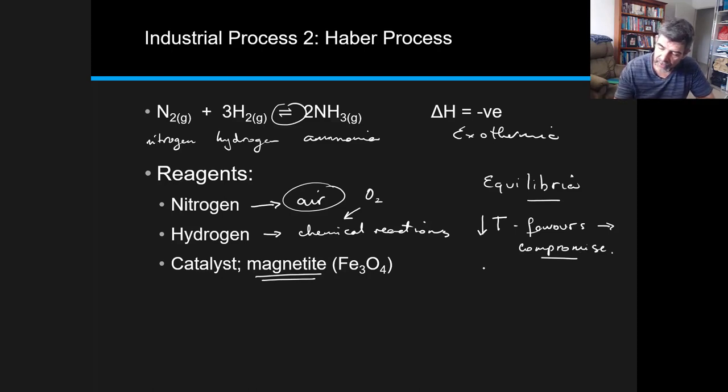The same is true with pressure. When we look at pressure, we have 1 plus 3 is 4 moles of gases on the reactant side and just 2 on the product side. Therefore, an increase of pressure will also favor the forward reaction, again increasing the yield.